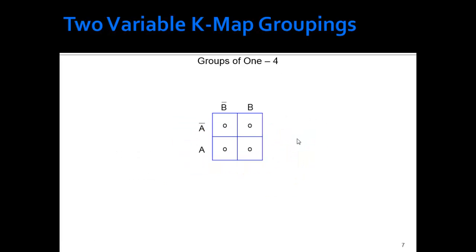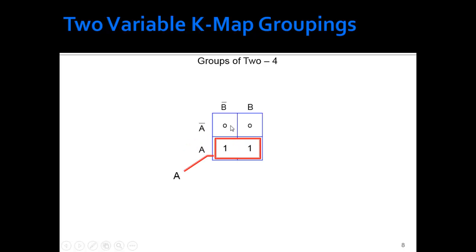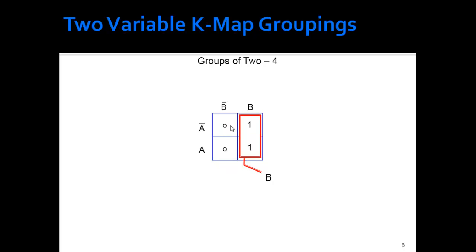There are four groups of one, and you can see them here. There's also a pair — when we have that pair we throw away B because B changed, while not A stayed the same. Here A stayed the same. Here A changed, so we keep not B. Here A changed, so we keep B. There's also a group of four.